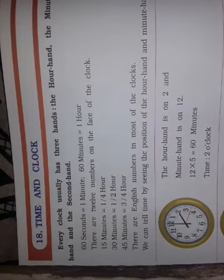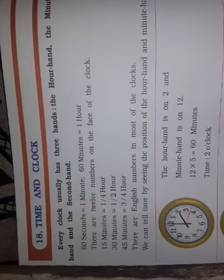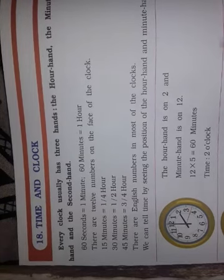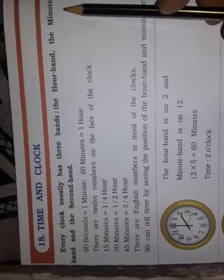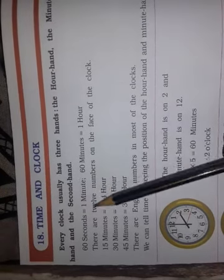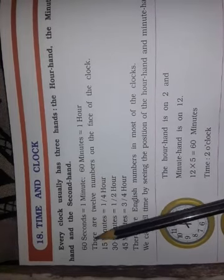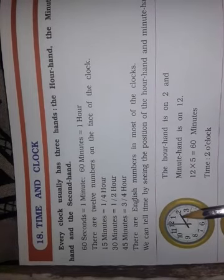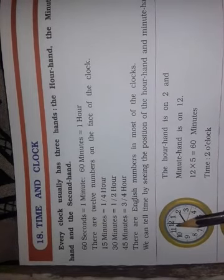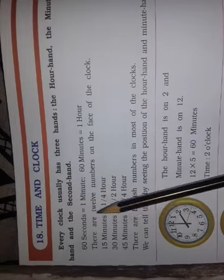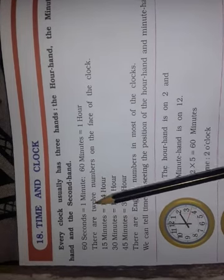So a clock has three hands: first is the hour hand, second is the minute hand, and third is the second hand. 60 seconds equal one minute.